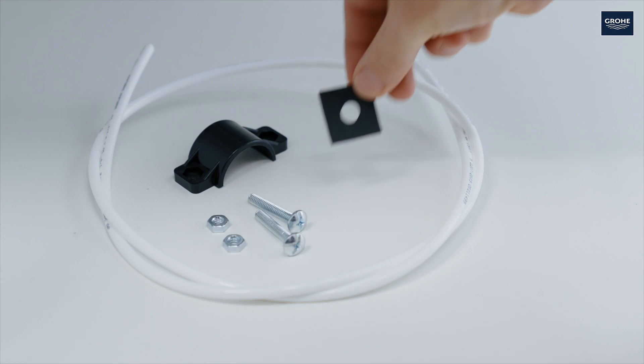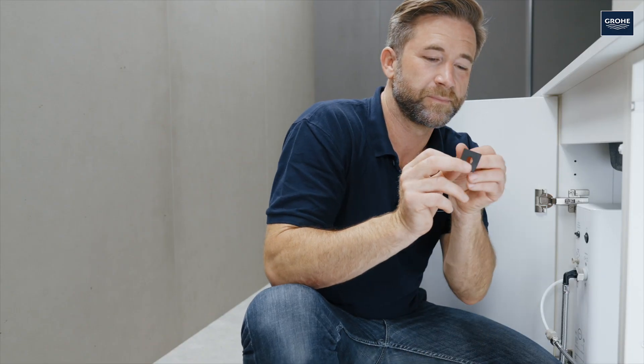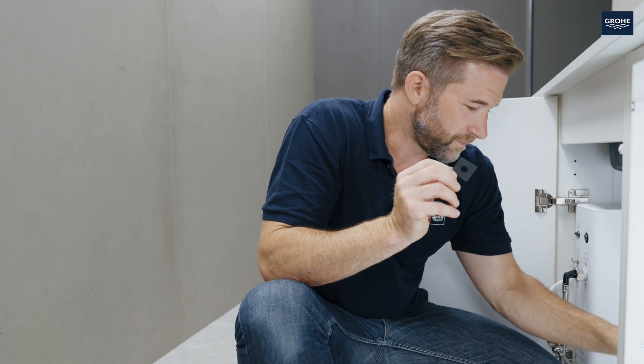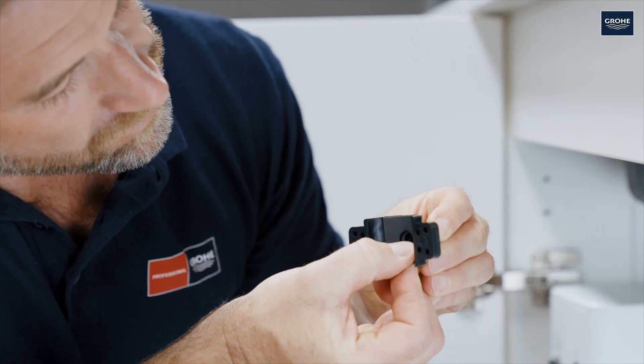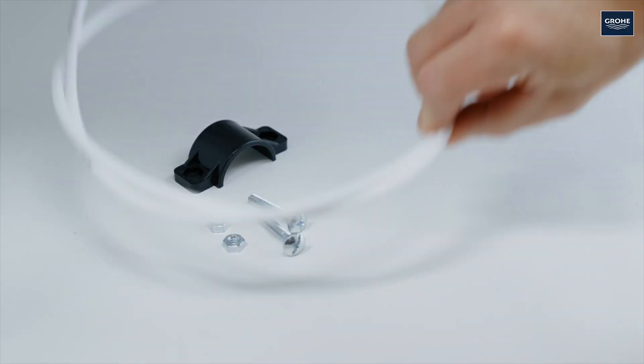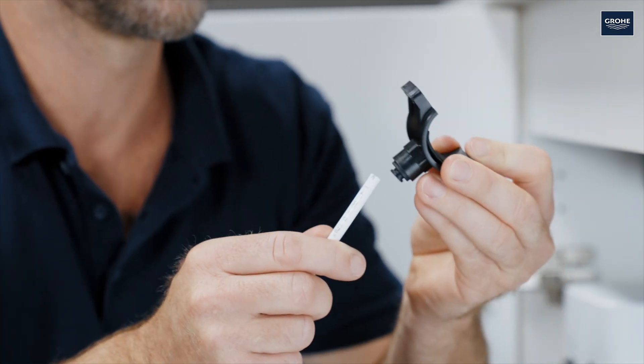Attach the rubber sealing washer. Pass the hose through for approximately 15mm and screw the clamp tight.